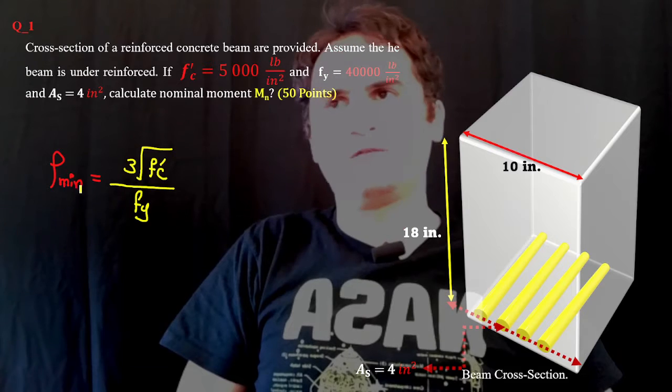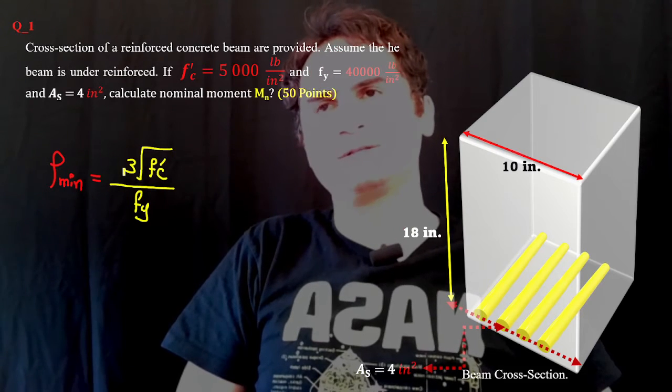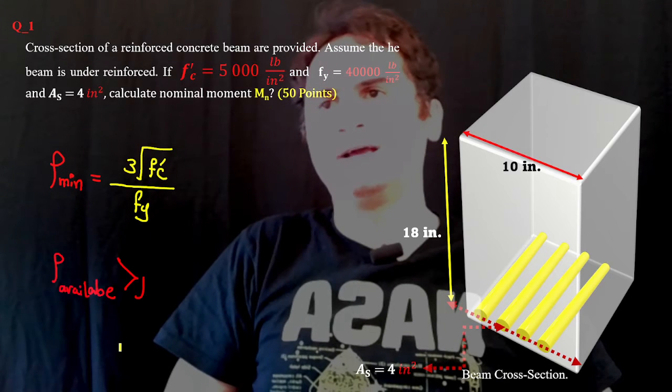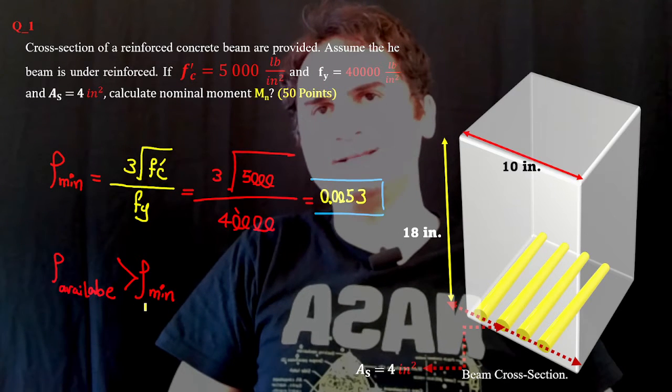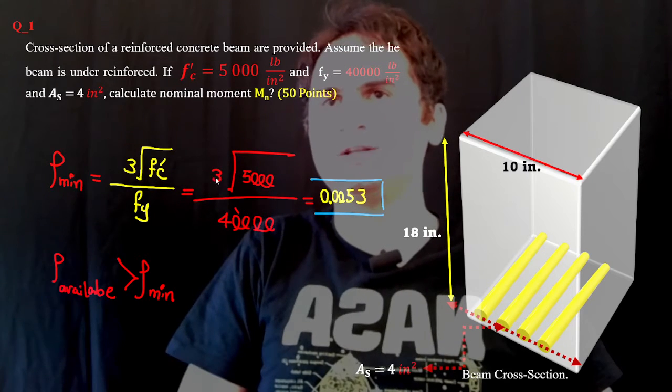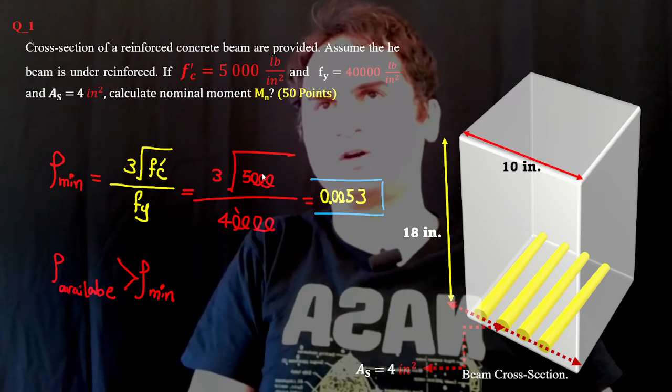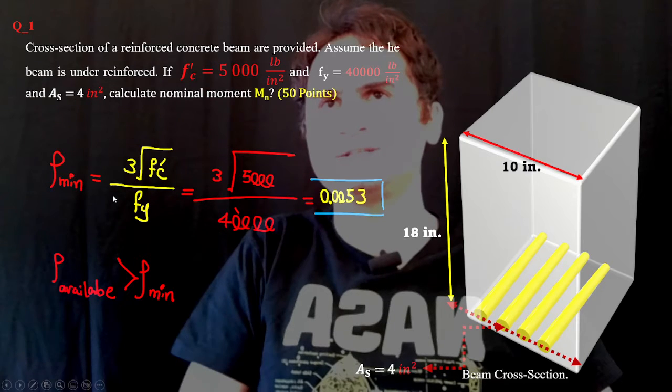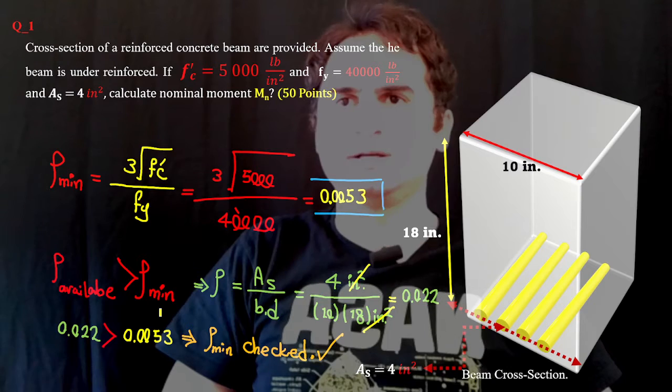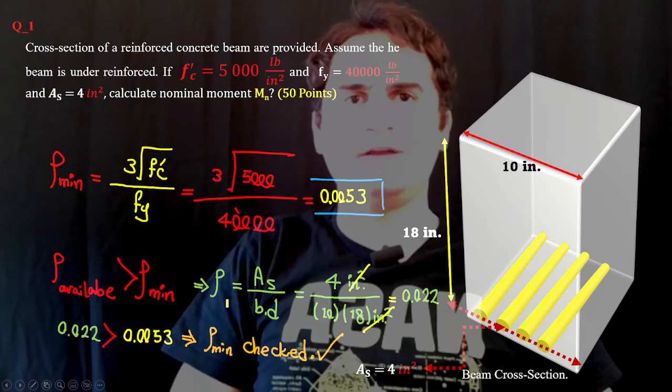Based on code, rho minimum equals 3 times the square root of f'_c over f_y. If you calculate it, that's 3 times the square root of 5,000 over 40,000.